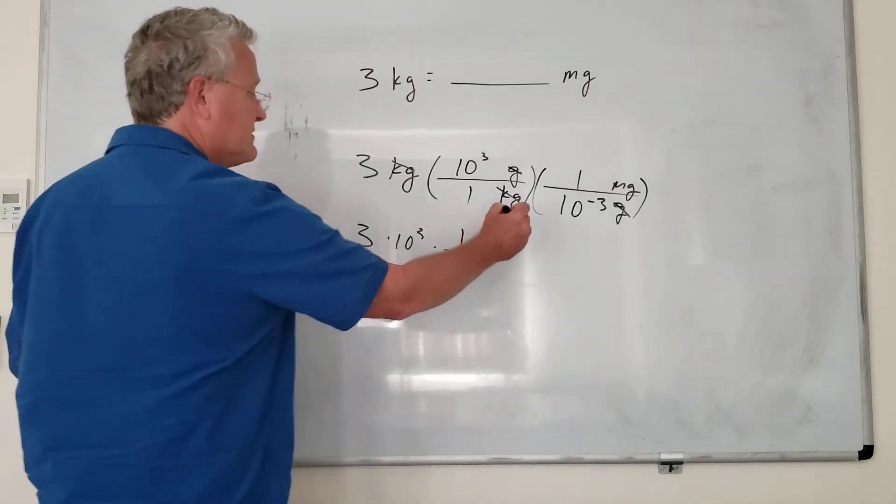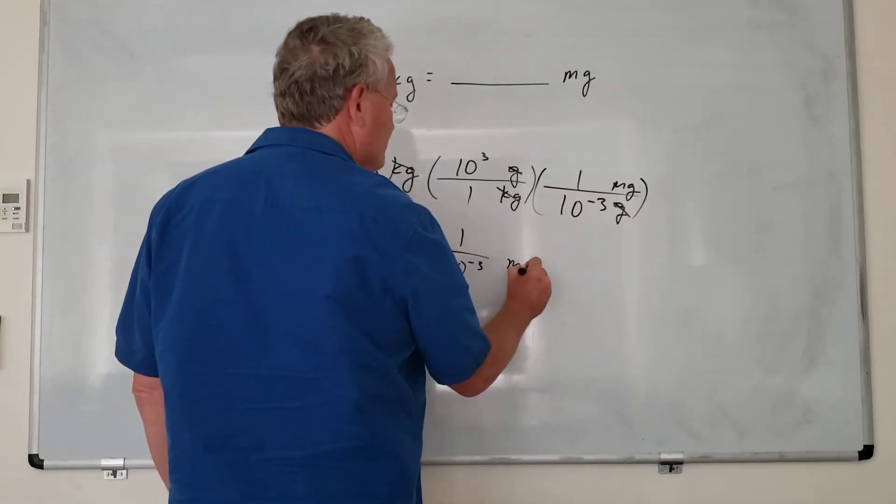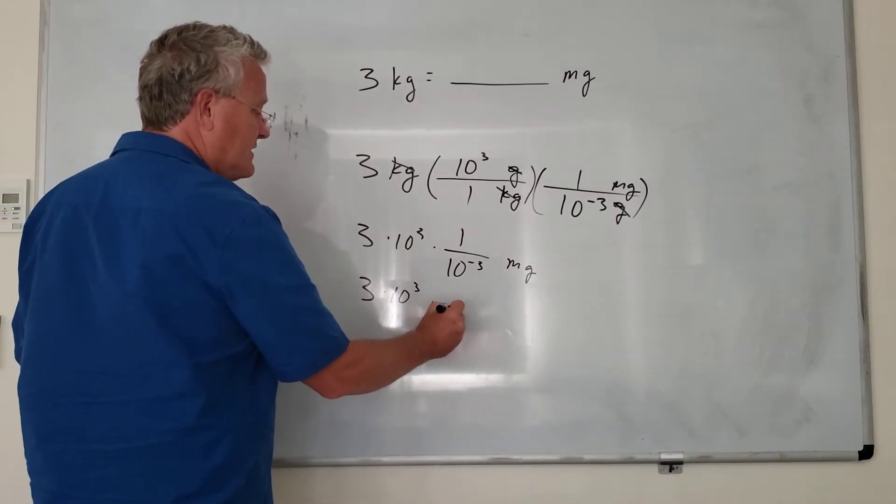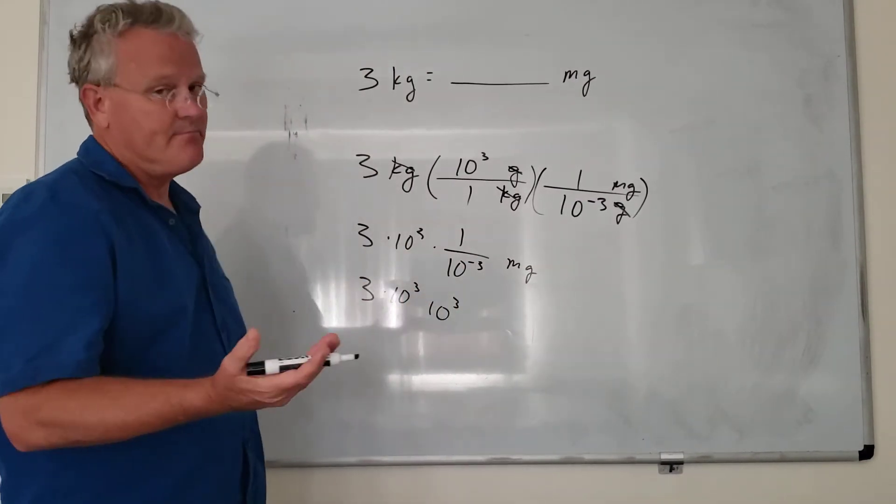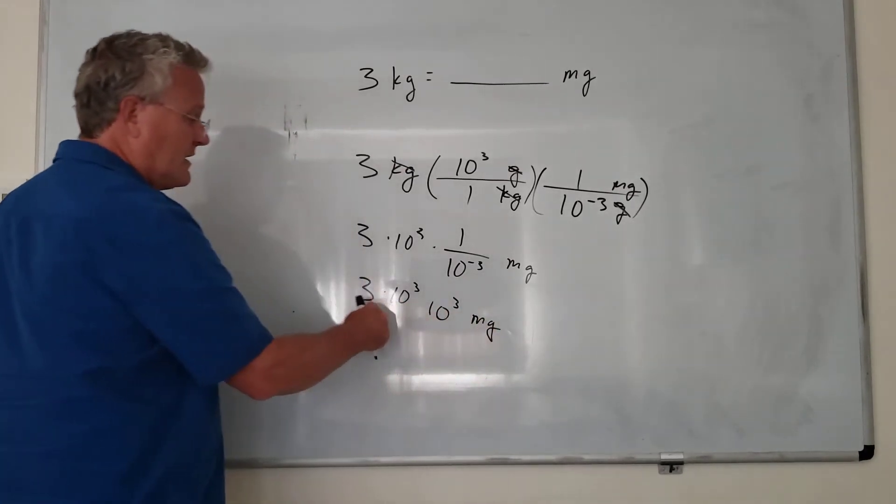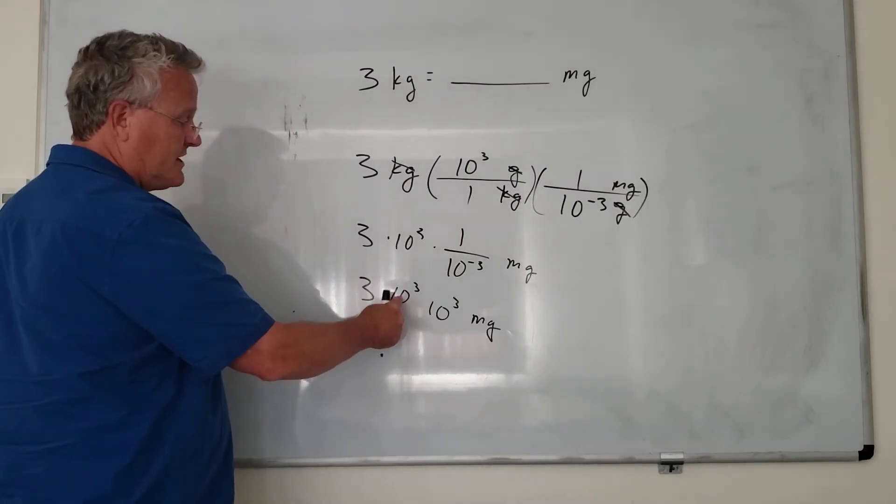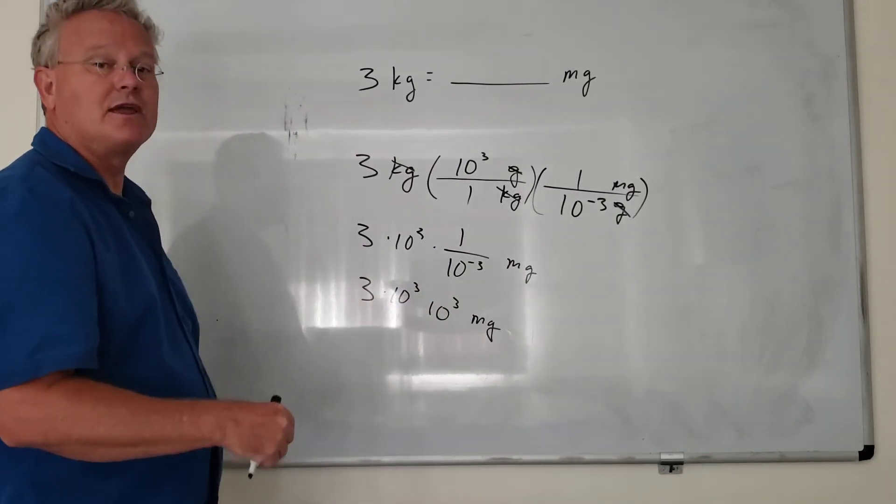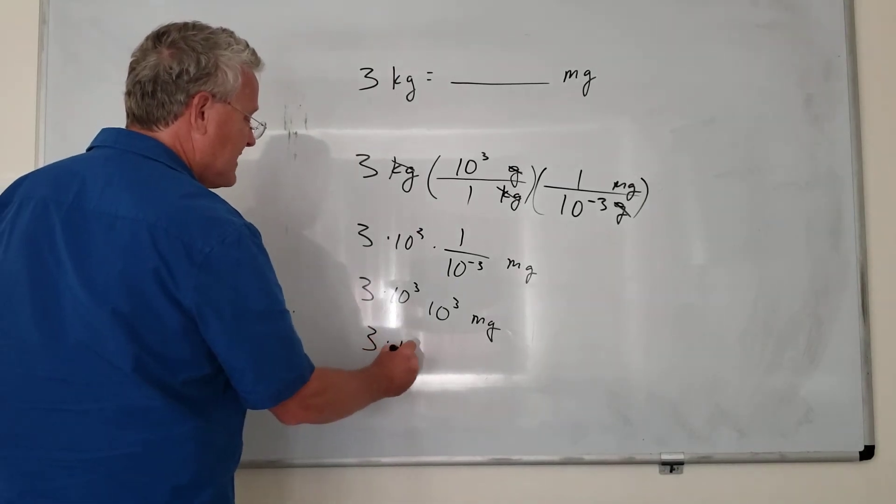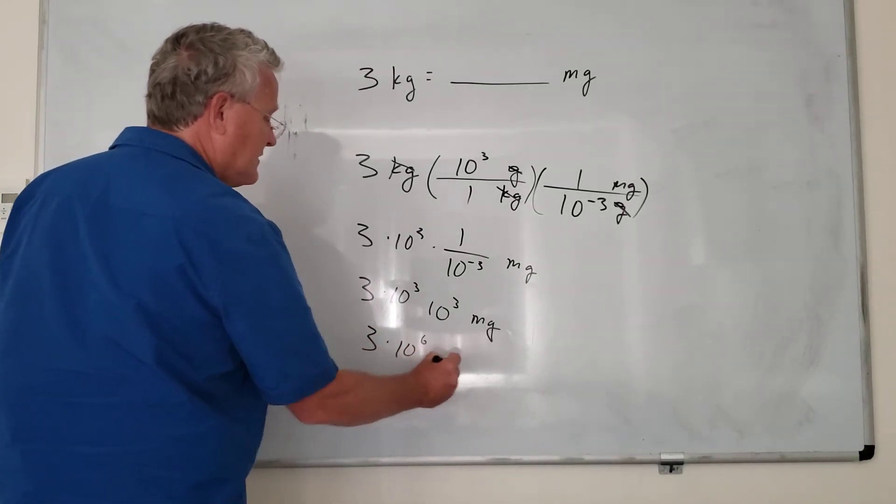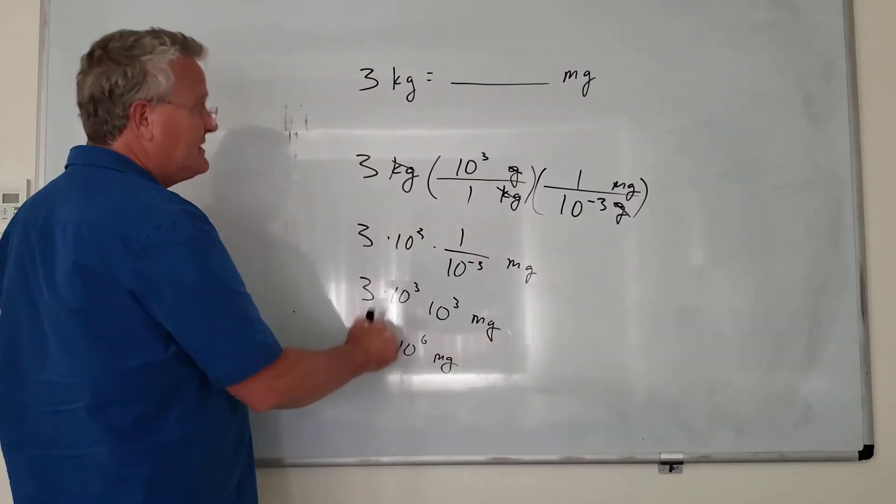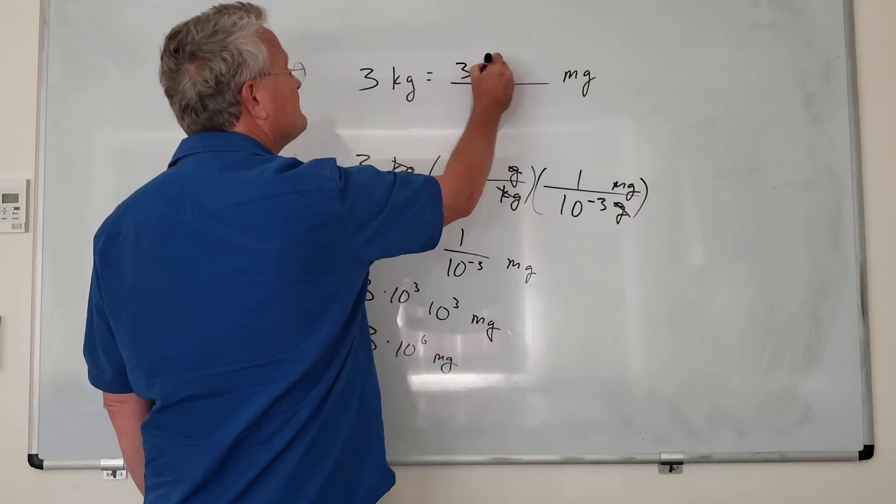...10 to the negative 3. Again by our exponent rules, 10 to the 3 times 10 to the 3, we add the exponents, so we get 3 times 10 to the 6 milligrams, and that's our answer.